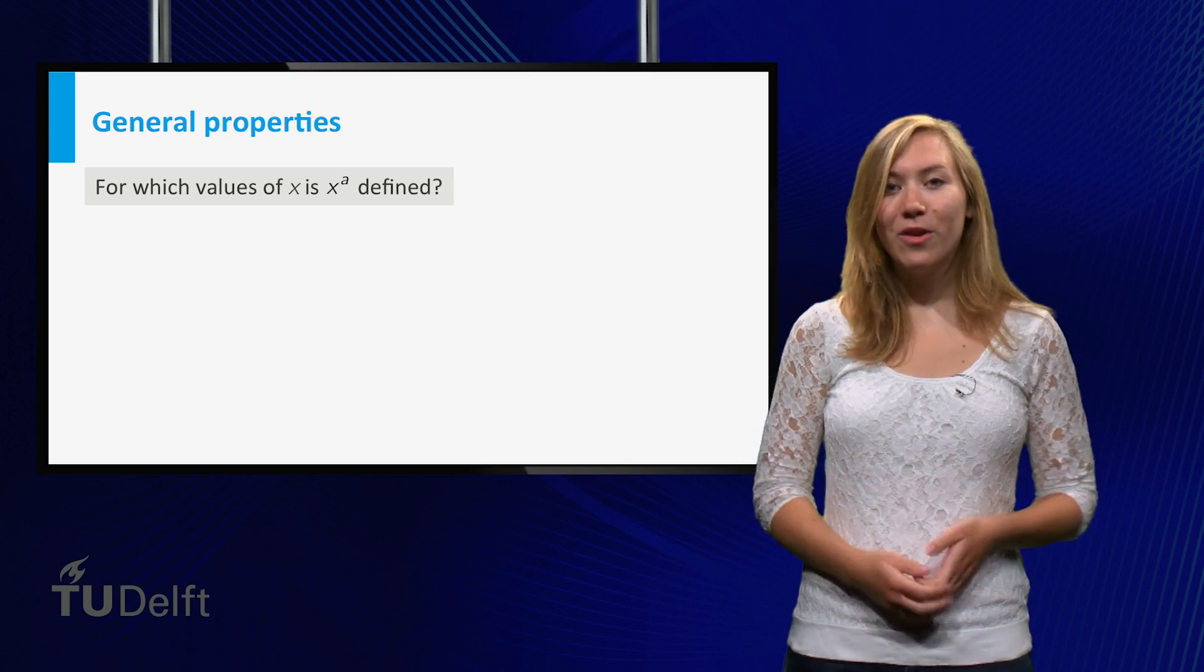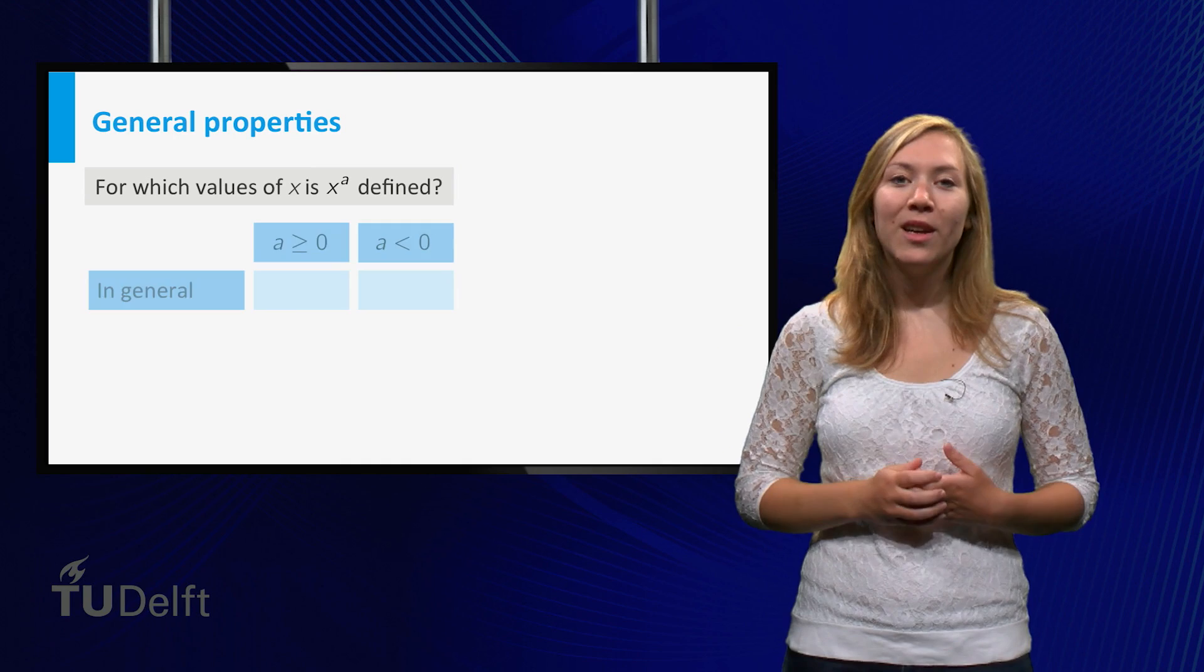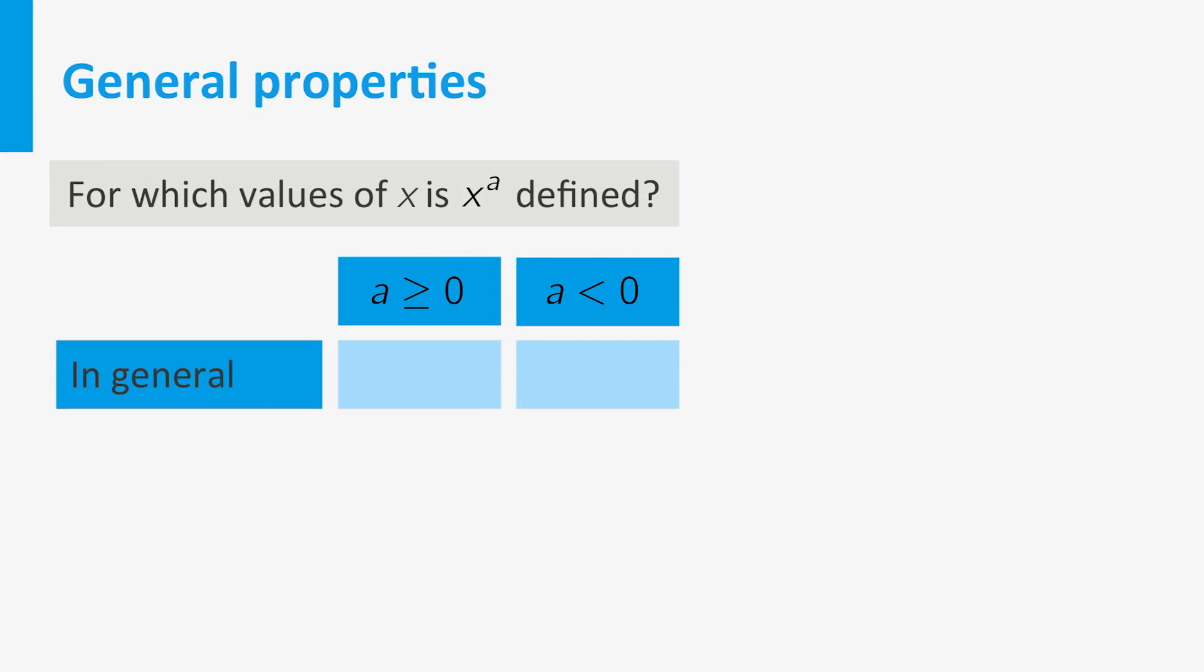The first question is, for what x values are they defined? Well, in general we have that if a is larger than or equal to 0, then the function is defined for x larger than or equal to 0. If a is negative, then we have to exclude x equal to 0. If a happens to be integer and non-negative, then x to the power a is defined for all x. If a is negative, then again we exclude x equal to 0.